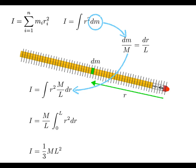For practice, you might want to work out what the rotational inertia would be for a pencil about its center of mass — in other words, imagine moving the axis of rotation to the center of the pencil.